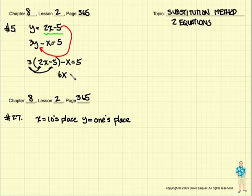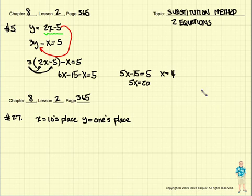So, we end up with 6x minus 15 minus x is equal to 5. We have 5x minus 15 is equal to 5. We have 5x is equal to 20. So, I think that makes x equals 4.